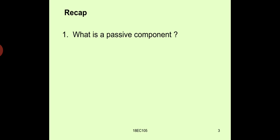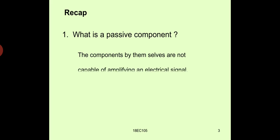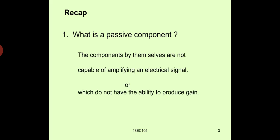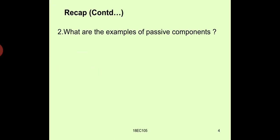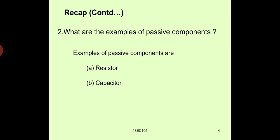Let us recap some of the topics relevant to us that we have covered so far. What is a passive component? The components which are not capable of amplifying an electrical signal, or which do not have the ability to produce any gain, are referred to as passive components. Examples of passive components include resistors, capacitors, and inductors.